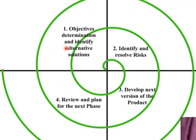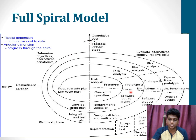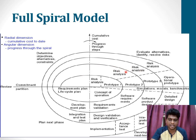In the simplified spiral model, the first stage is to clearly determine the objectives and find alternate solutions to the problem. Then the identified risks are resolved. We develop a new version based on that identification, and finally we review and plan for the next phase. The spiral model has many loops — the exact number is unknown and can vary from project to project.